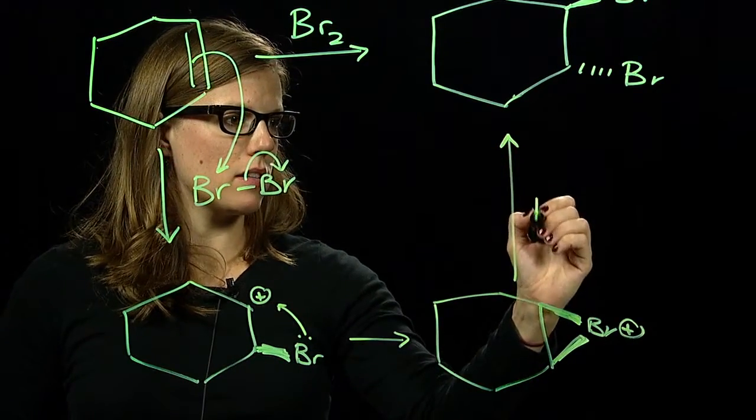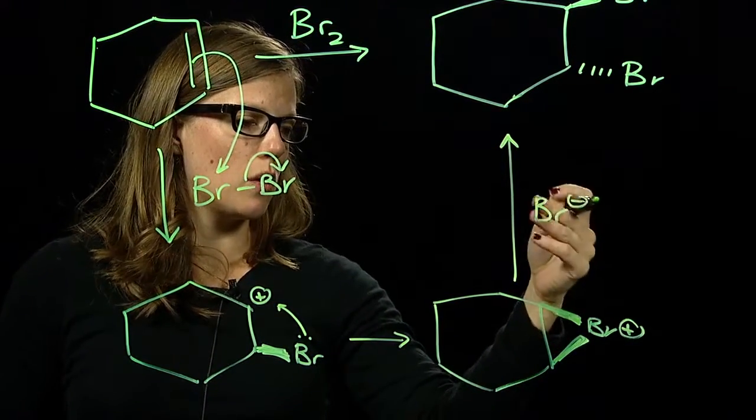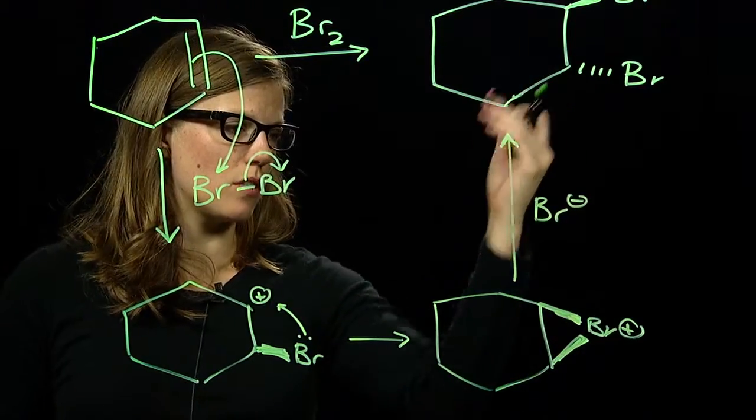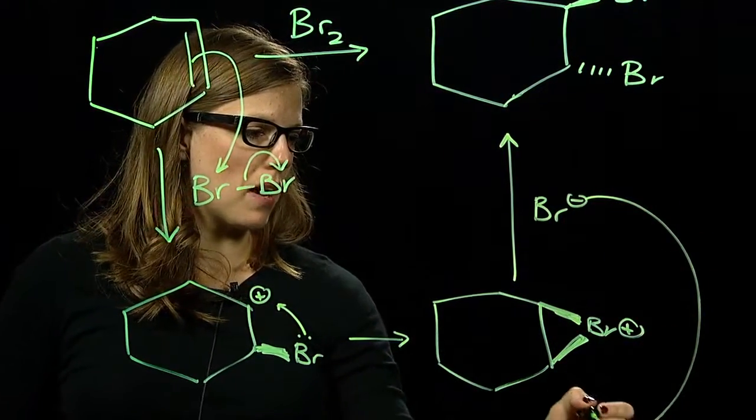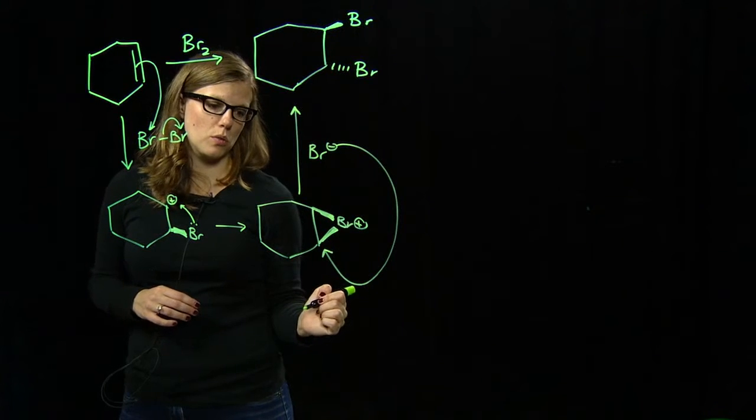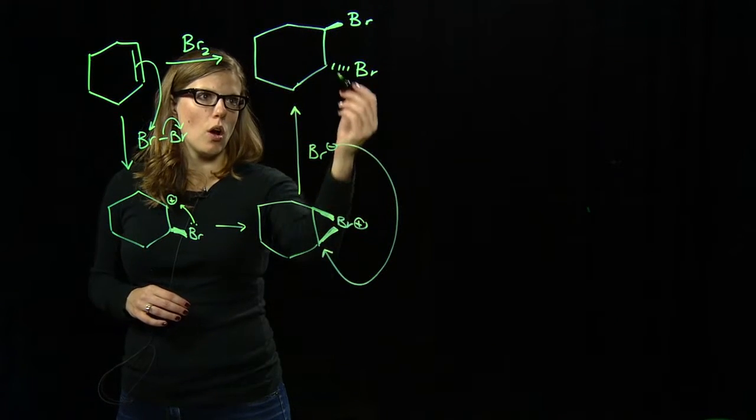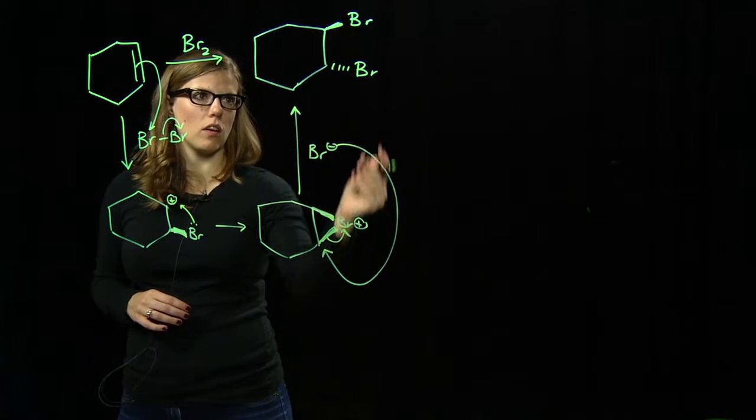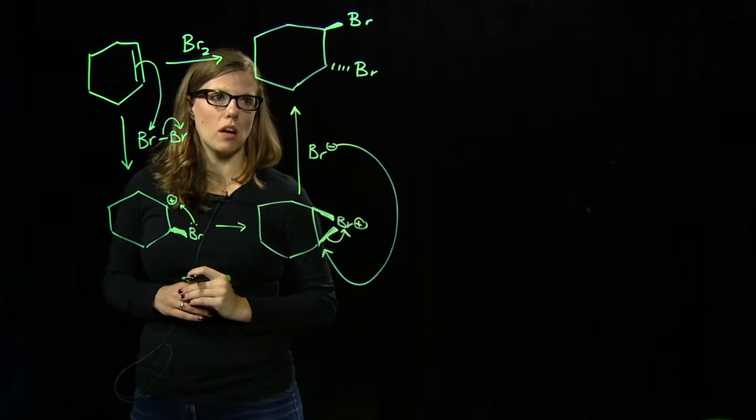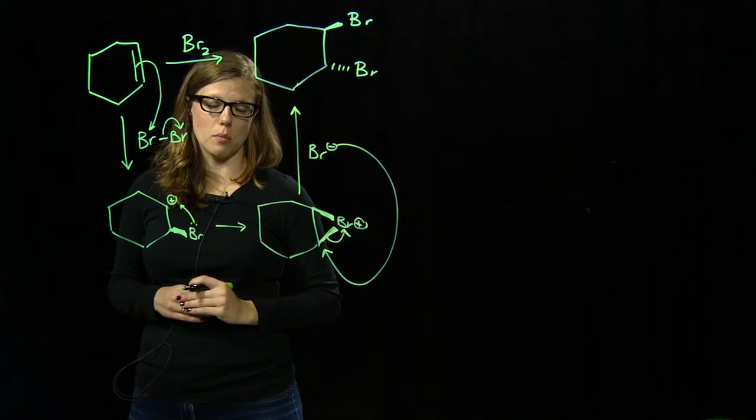Our Br minus then comes in, and you can have it attack either carbon. In this case, you'll get the same product. So it has to do the backside attack, similar to an SN2 reaction, opening the ring and giving the trans addition of Br2 across the double bond.